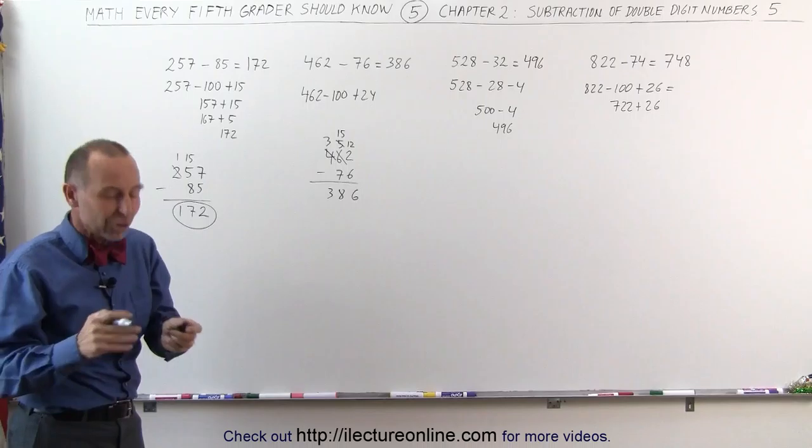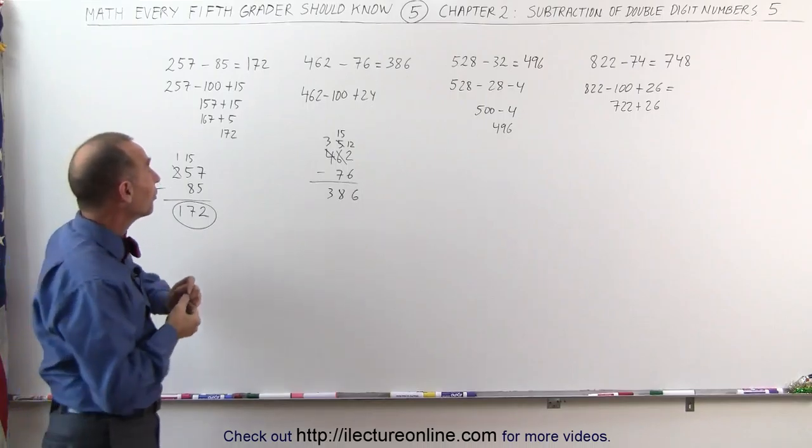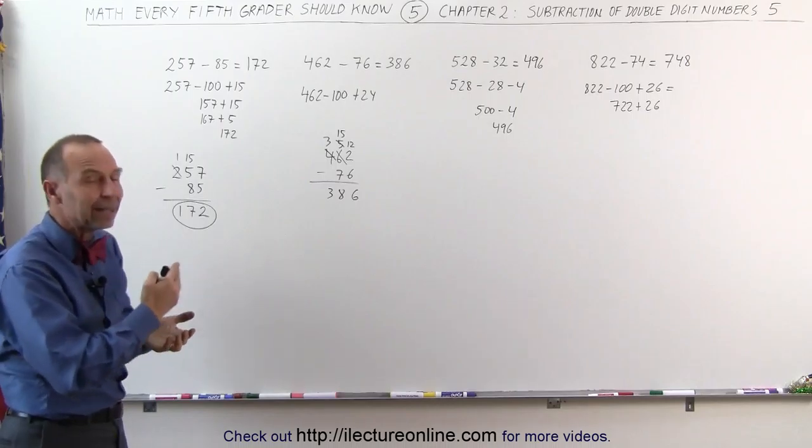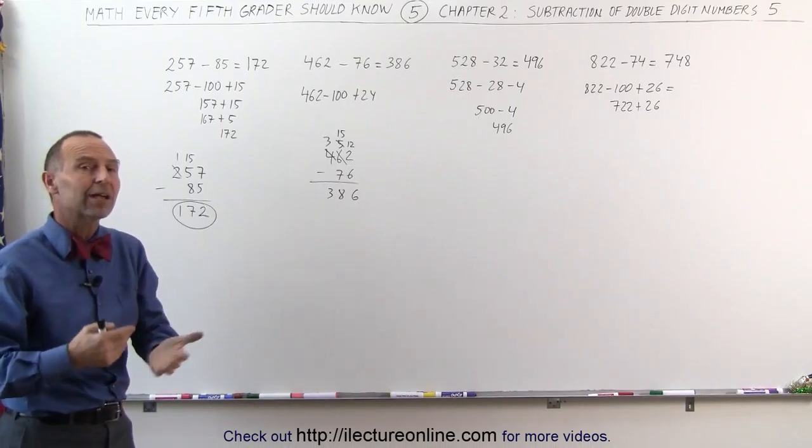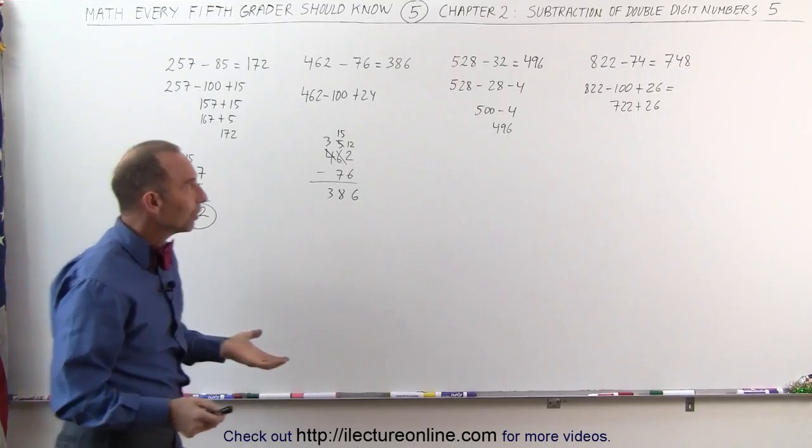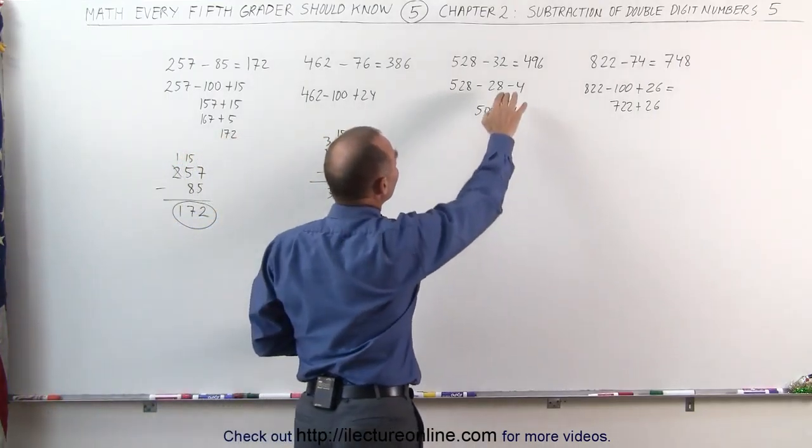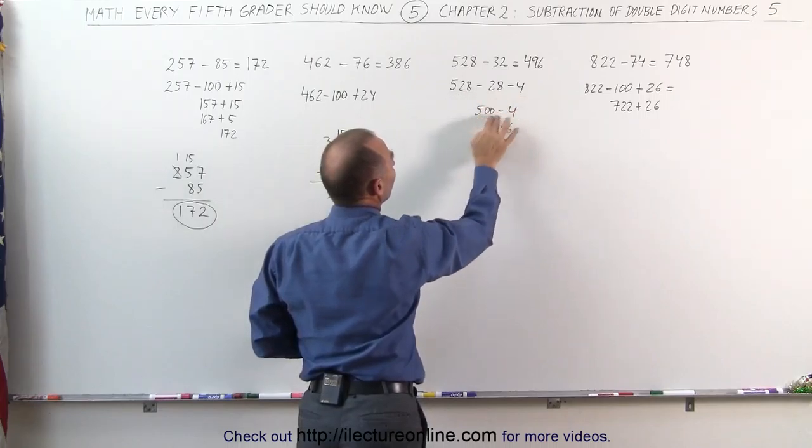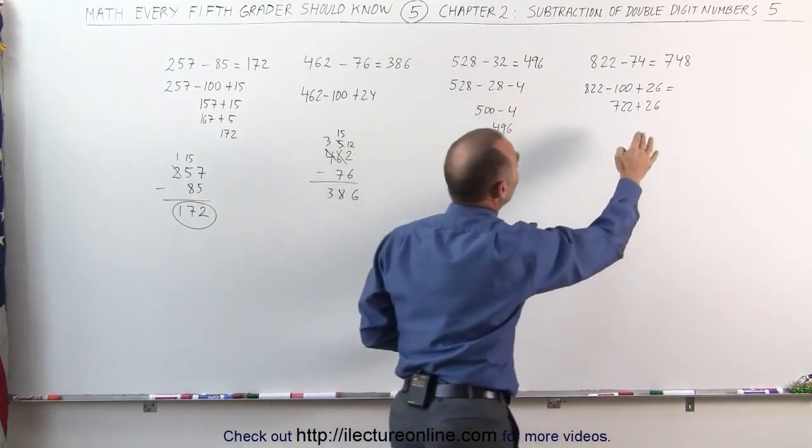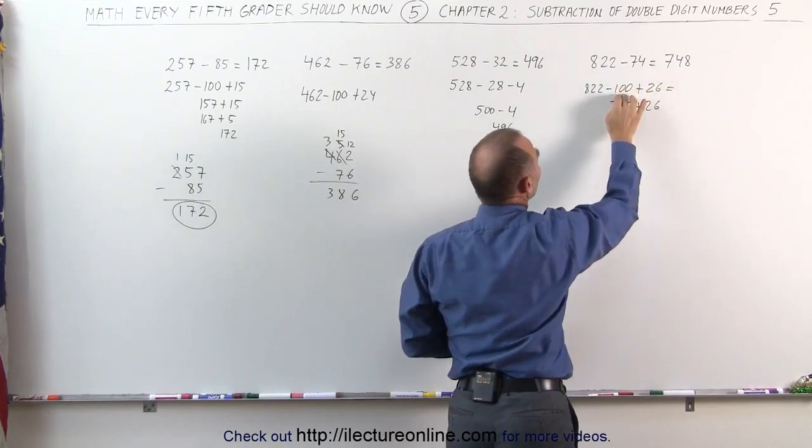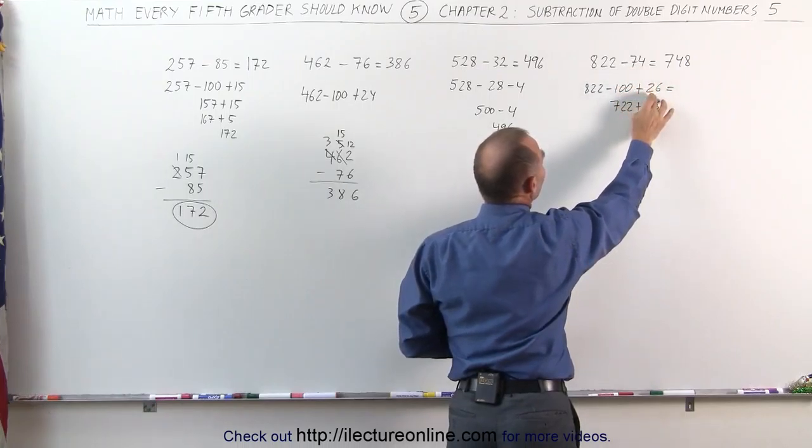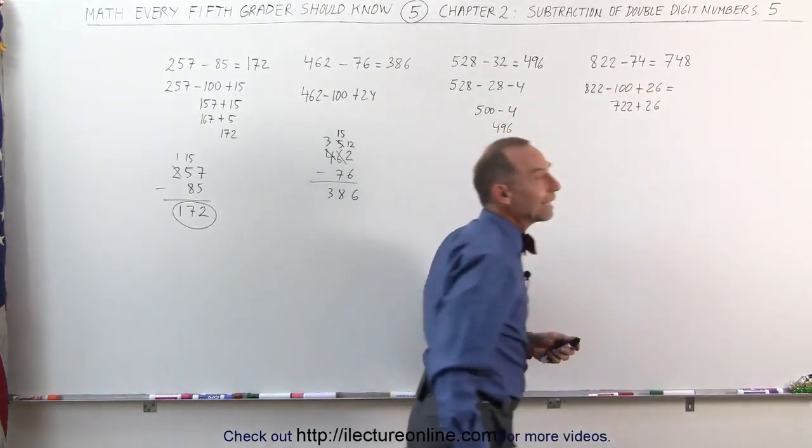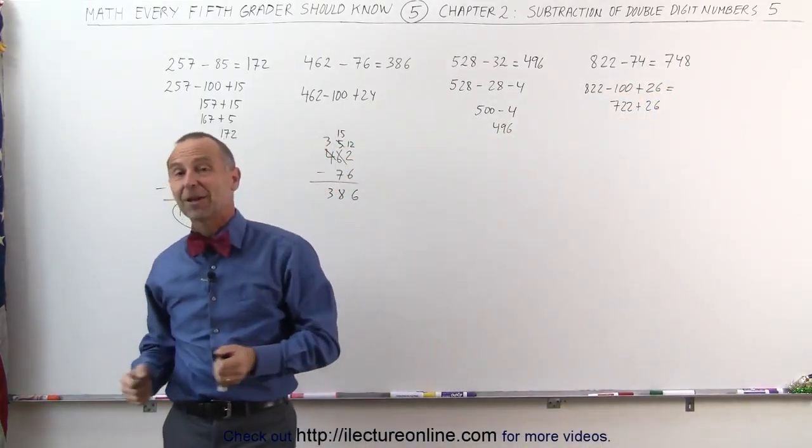You can always fall back to the technique that you know how to do, but if you can learn how to do it like this quickly in your head, it will make you that much more powerful in handling all kinds of mathematics and later on handling all kinds of sciences. If you can come up with these kind of techniques and these clever techniques, 32 is the same as 28 and 4, so subtract 28 first, then subtract 4, or you can say that I'm going to subtract 100 first and then add the 26 later. 822 minus 100 is 722, add 26 I get 748 and that's the answer. That's how it's done.